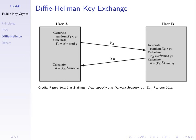A sends Y to B. B does effectively the same: they generate a random private X, keep it to themselves, calculate their public Y, and send their public Y back to A. From their private value X and the other user's public value Y, each user calculates a value K. It can be proved that the K calculated by user A will be identical to the K calculated by user B — they get the same secret.